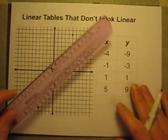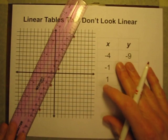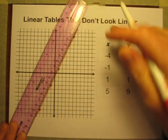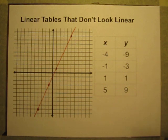And even though the changes seem to be all over the place, if I connect these with a line, sure enough, a straight line connects all those points. So this one actually is showing a linear pattern.